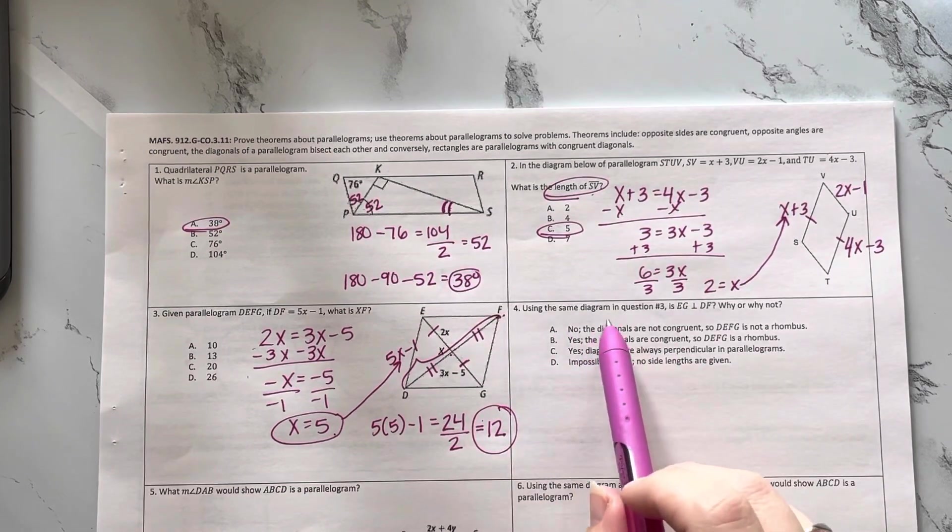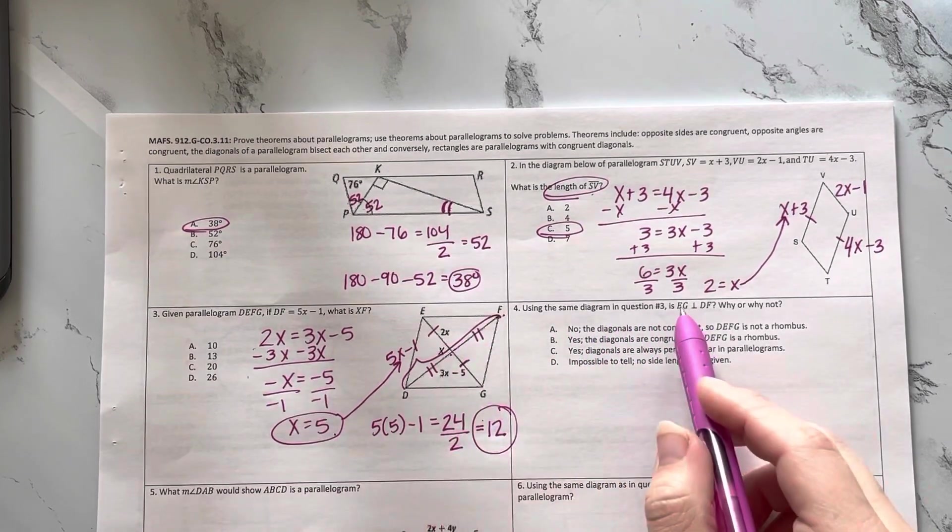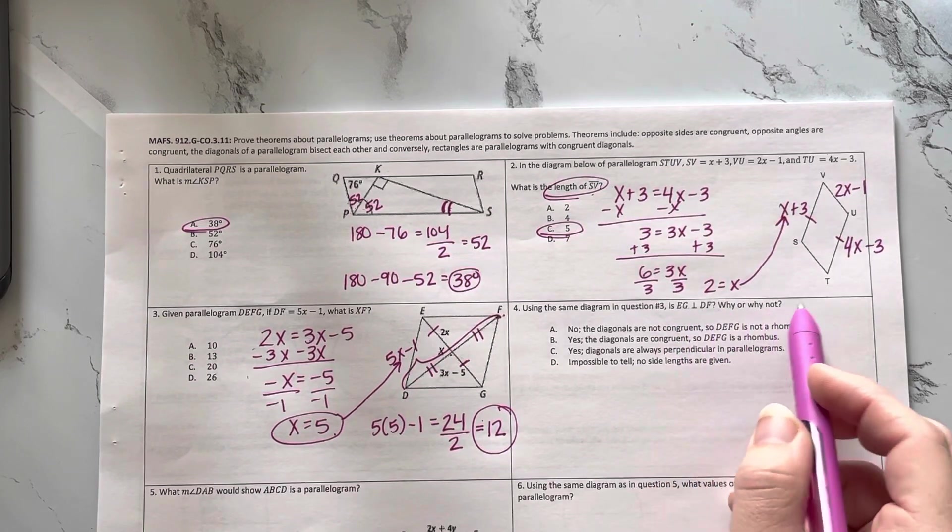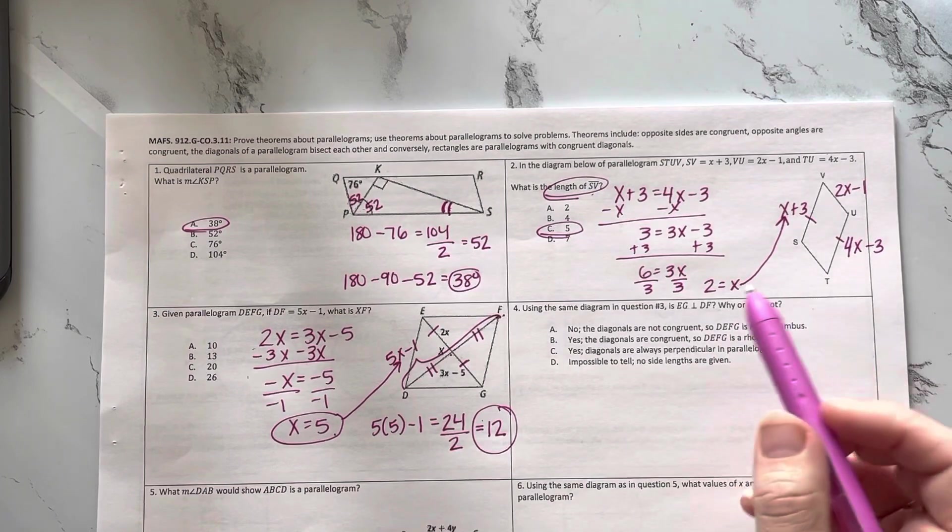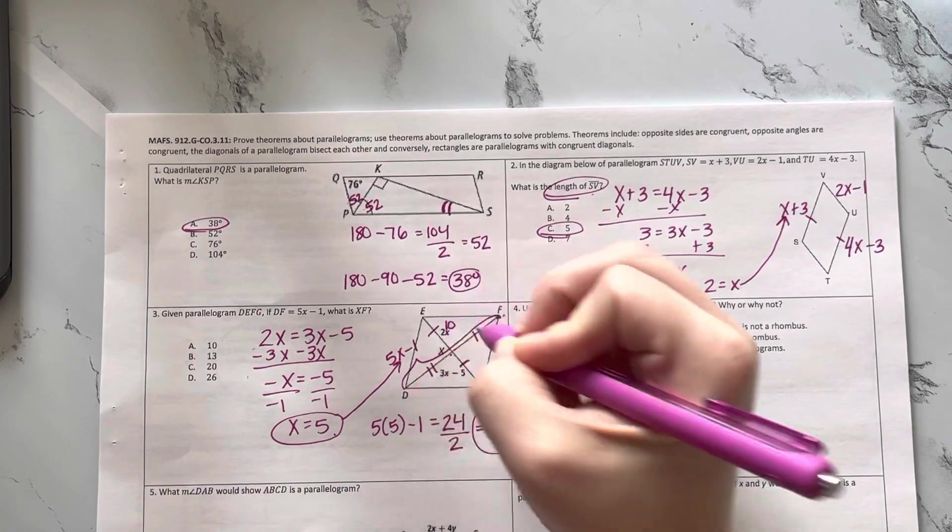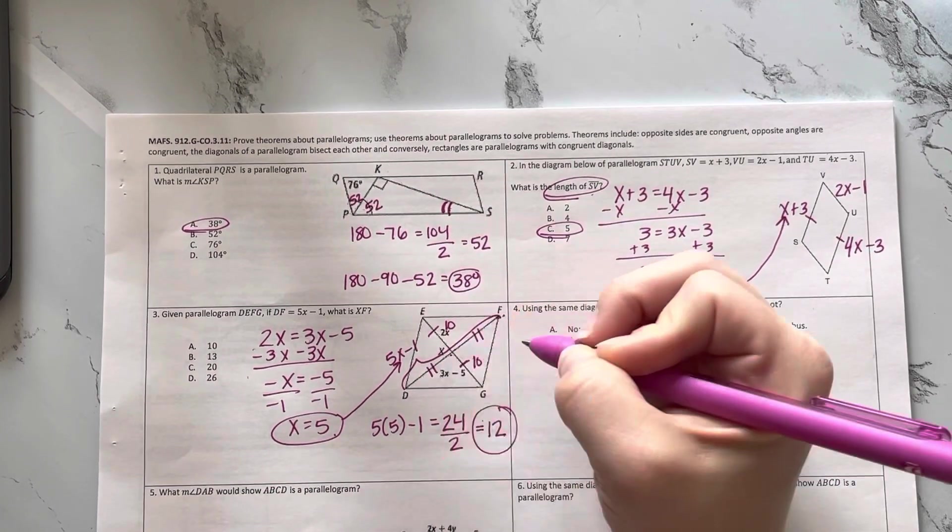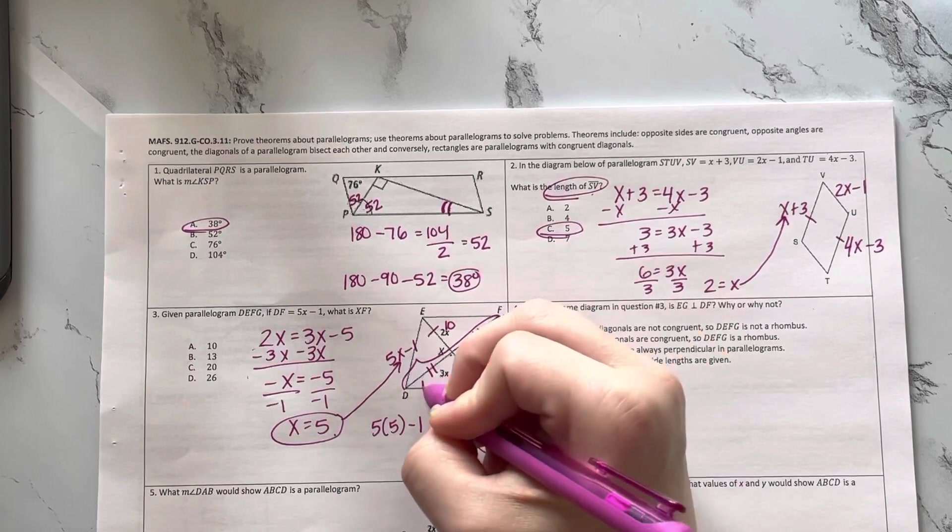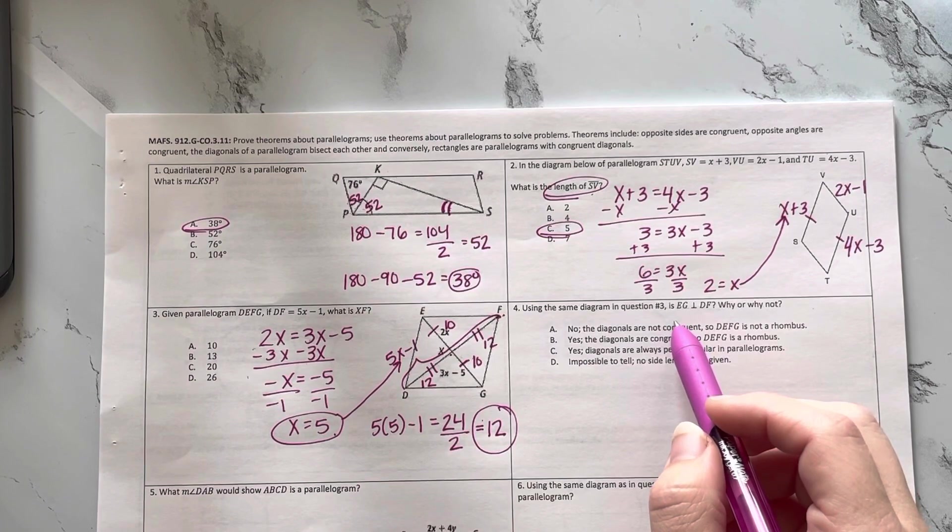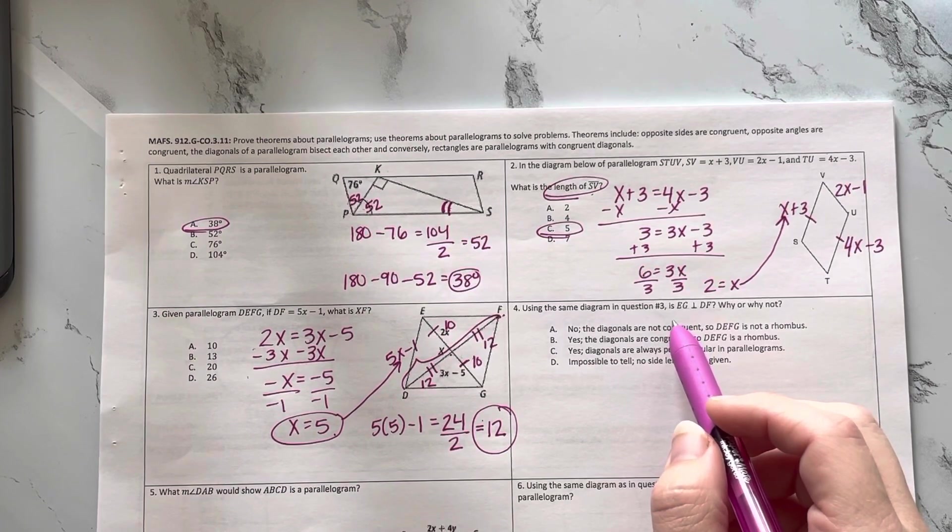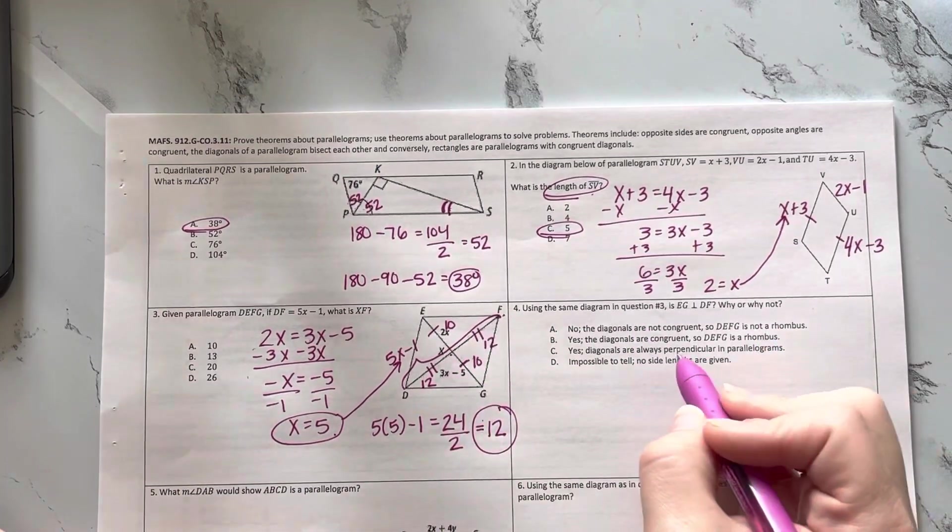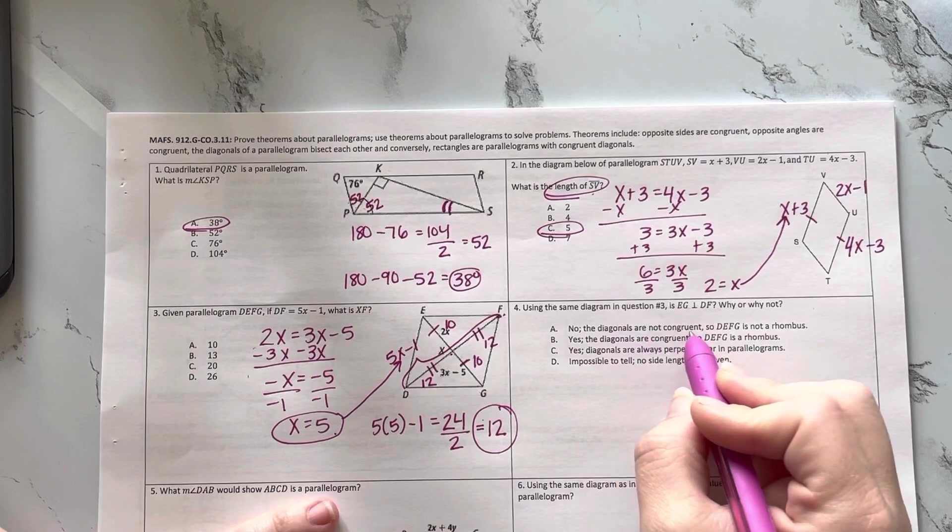Using the same diagram in question 3, is EG perpendicular to DF? Why or why not? Well, if I plugged this 5 in here, I'd get 10 and 10. This is 12 and 12. The diagonals are not congruent unless it is a square. And it's not a square because the diagonals are not congruent. So let's see. No, the diagonals are not congruent.